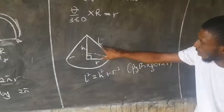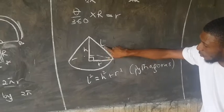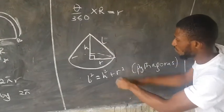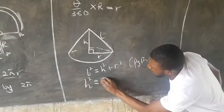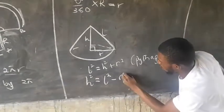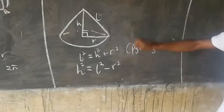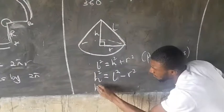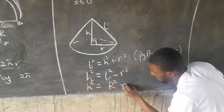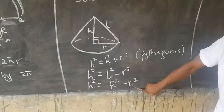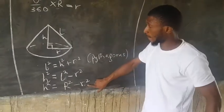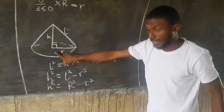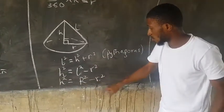Rearranging by collecting like terms, the perpendicular height h² = l² − r². And since l equals the radius of the sector R, we can write: h² = R² − r². This is the relationship connecting the perpendicular height, the sector radius, and the base radius of the cone.